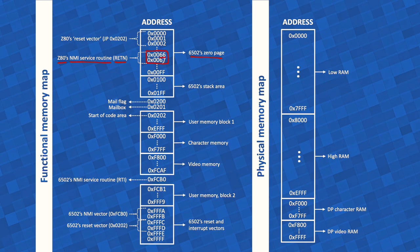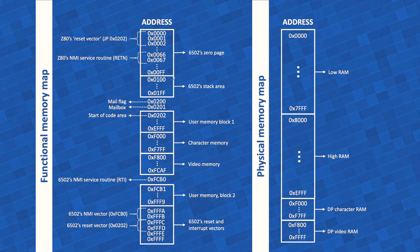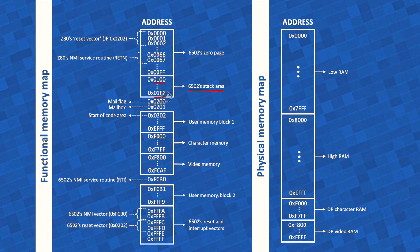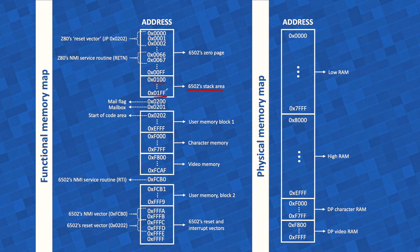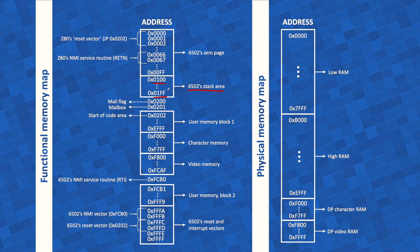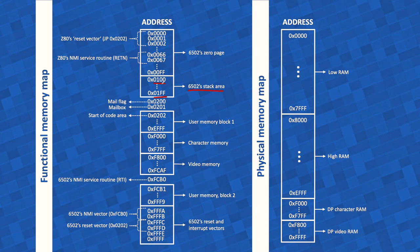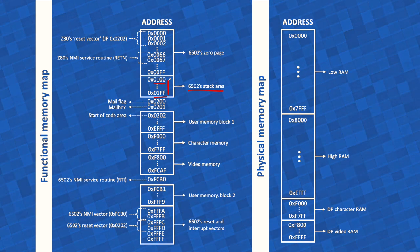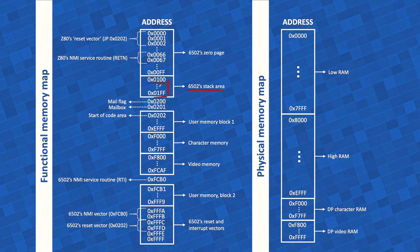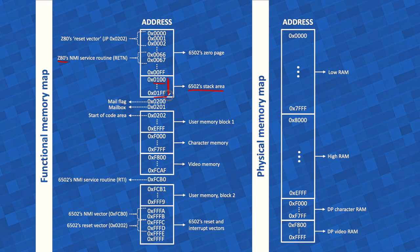From address 0x100 to 0x1FF is the 6502's stack area — where the 6502 pushes and pops from the stack. This is hardwired and not relocatable; the 6502 is hardwired to use this address space for its stack. If you are programming in 6502 mode you cannot put other code there, but in Z80 mode it is just available memory to use freely.